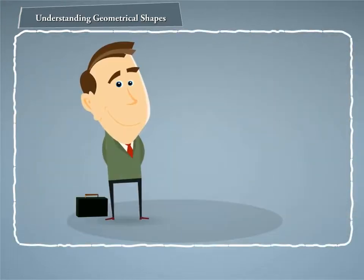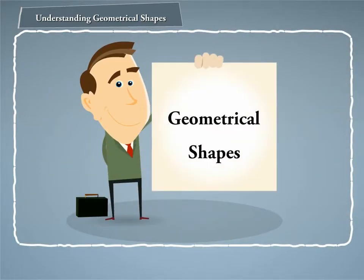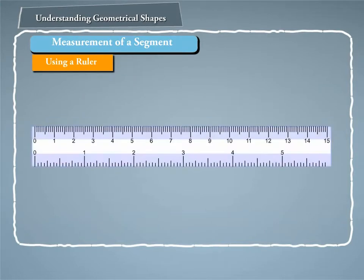In this module we will learn about geometrical shapes using a ruler. As you can see in this figure, the mark corresponding to B is the 8th small division after 5.